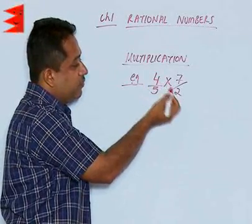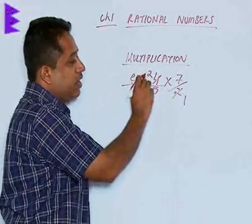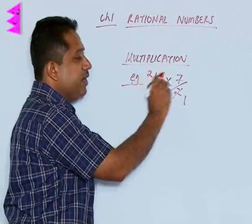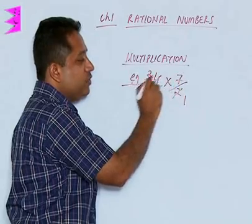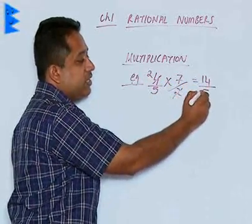We find that there is a 4 and 2 here and therefore I can cancel to get 2 and 1. All you have to do is straight multiplication. The numerator is multiplied by the numerator. So we get 2 into 7 that is 14 divided by 5 into 1 that is 5.